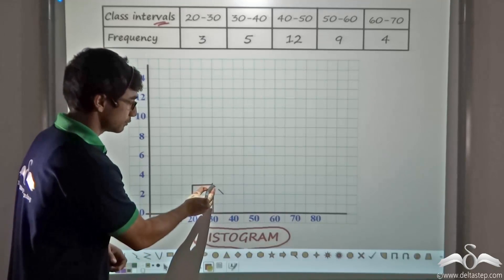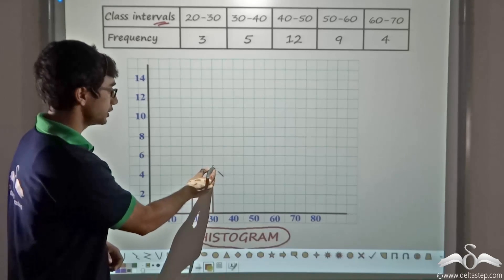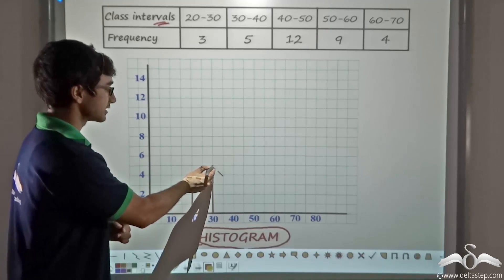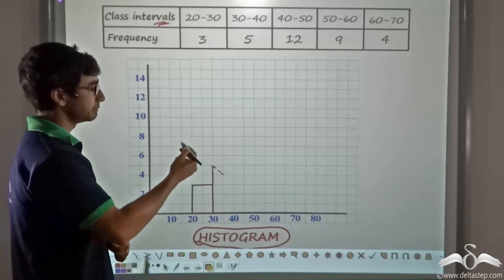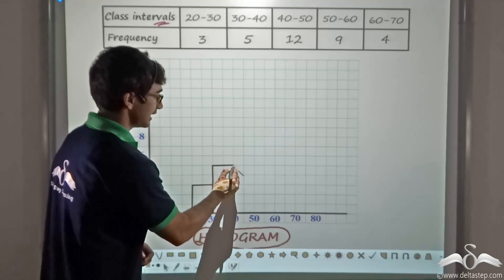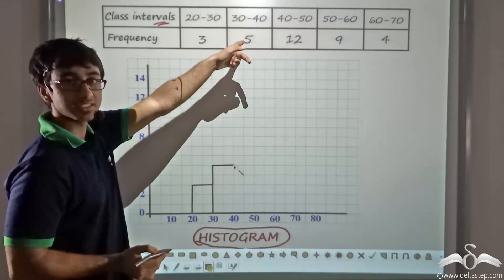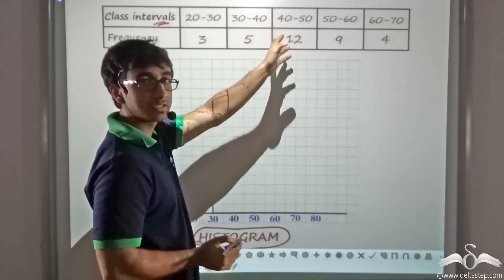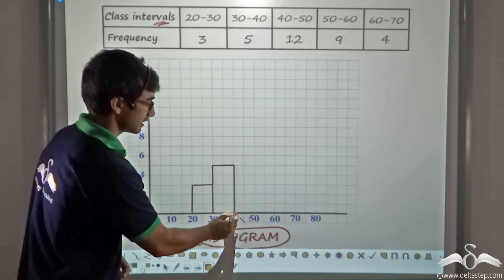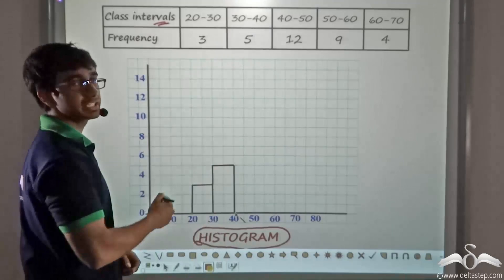From that point I draw a vertical line downward. This gives me one bar of the histogram. For the second class with frequency 5, I start from the rightmost top point where the first bar ended and draw a straight line up to the point 5, which lies between 4 and 6. Again I draw a horizontal straight line till 40, the upper class limit for the second class, equal to the lower class limit for the next class, and then draw a vertical line downward.